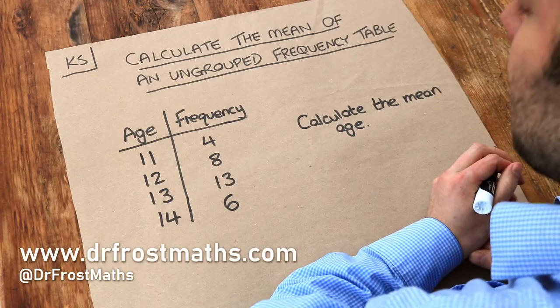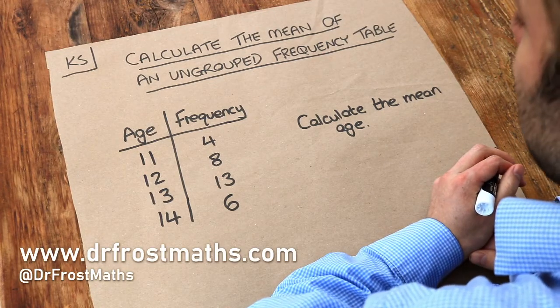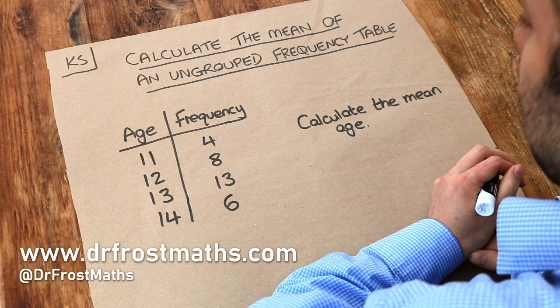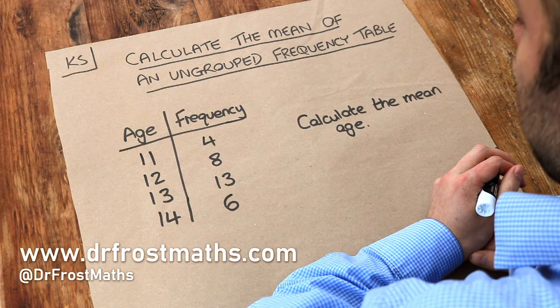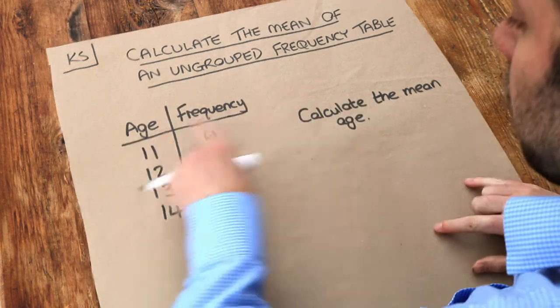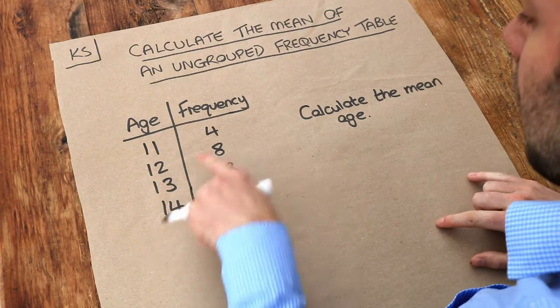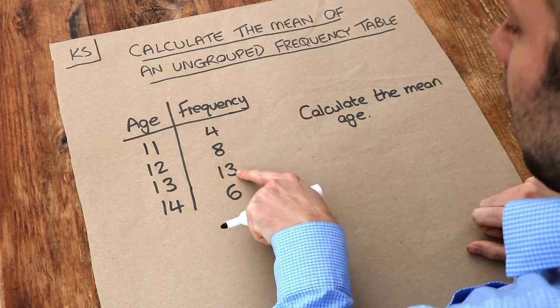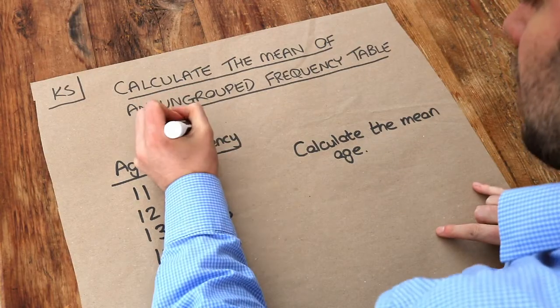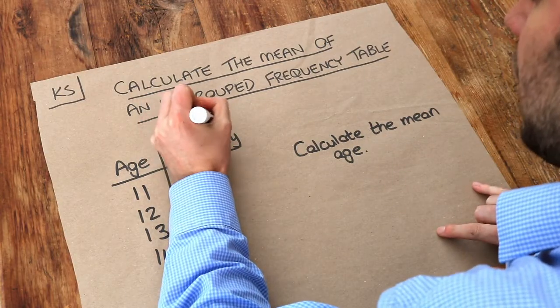Hello and welcome to this Dr. Ross-Math's key skill video on calculating the mean of an ungrouped frequency table. Now what I mean by an ungrouped frequency table is where we've got different values and then we say how many of each thing we've got. Remember that frequency just means how common it is.